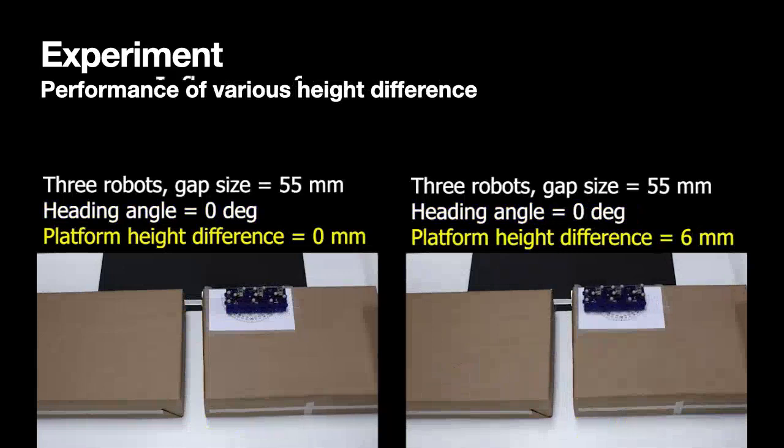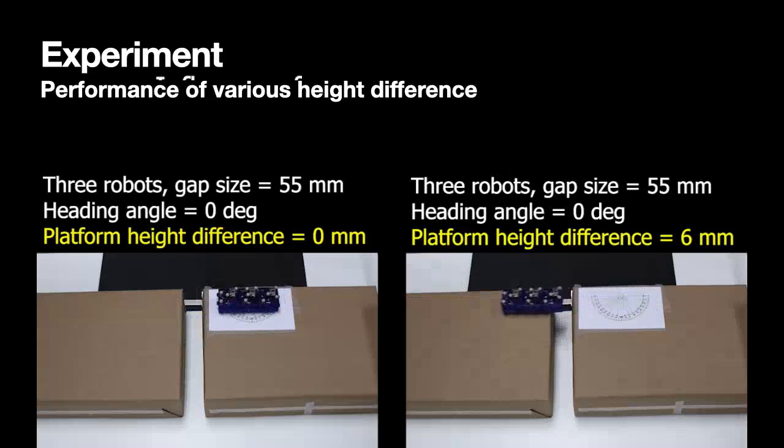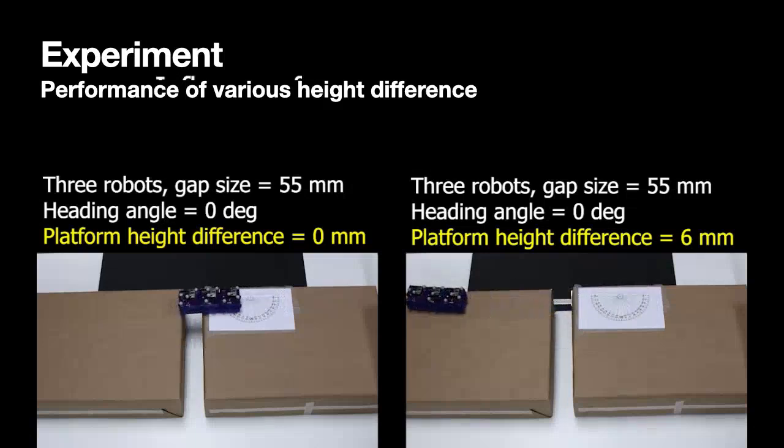The height difference between platforms also influences the behavior. In the platform of the video on the right hand side, the platform on the right is slightly higher than the platform on the left. As we mentioned before, there is a height drop when the robot assembly moves towards the gap. With a height difference, the robot is able to cross a larger gap size. Here we are showing the result of a platform height difference with 0 mm and 6 mm.